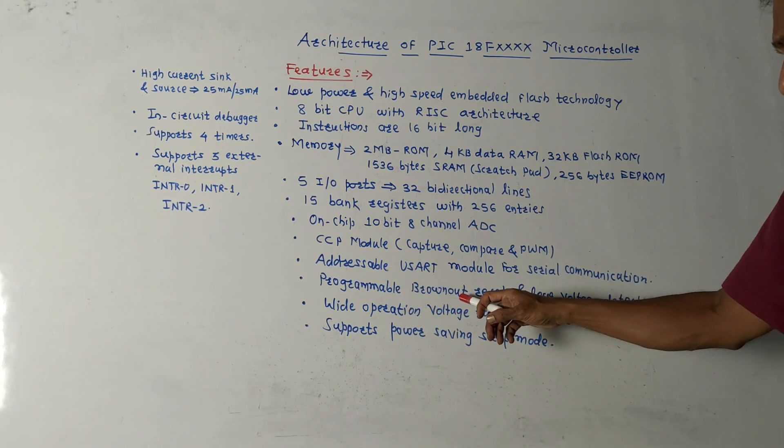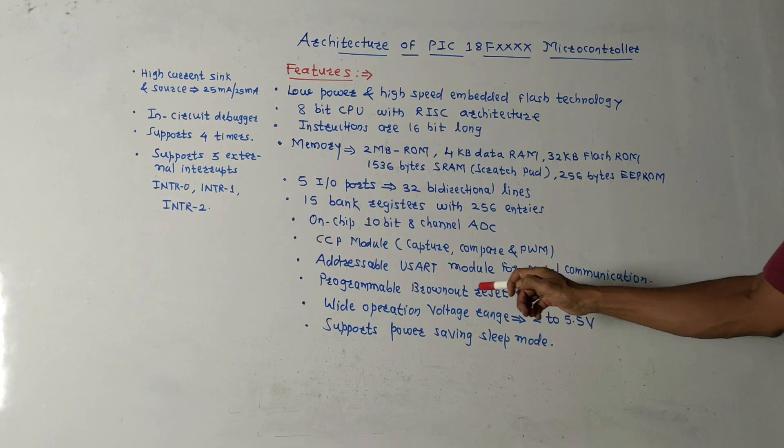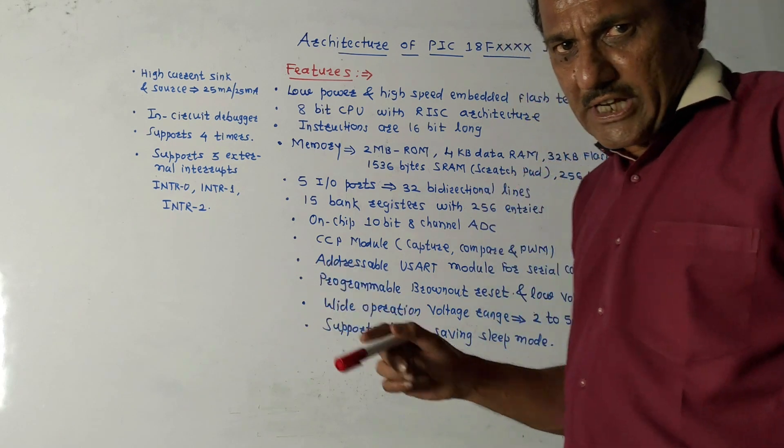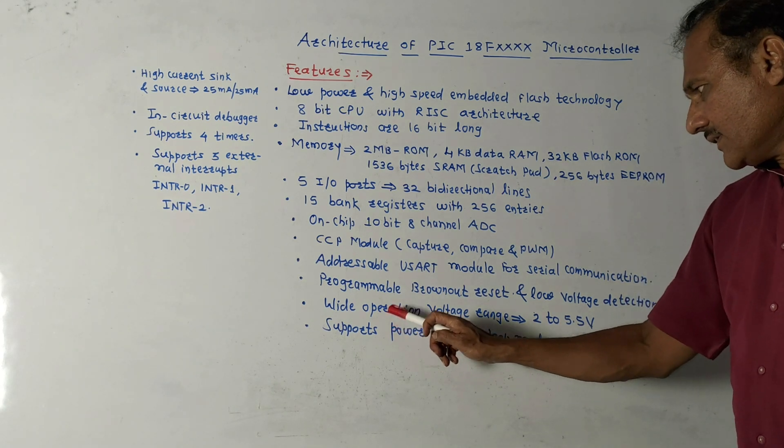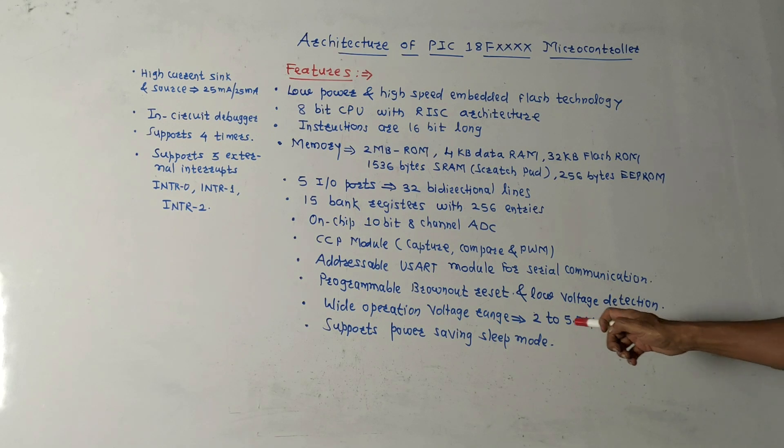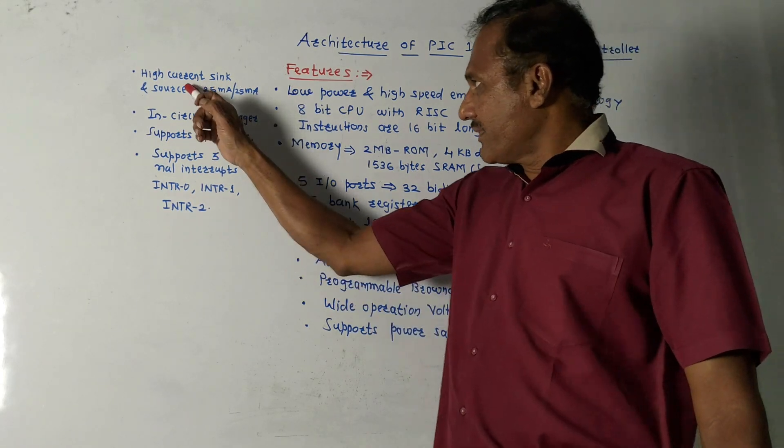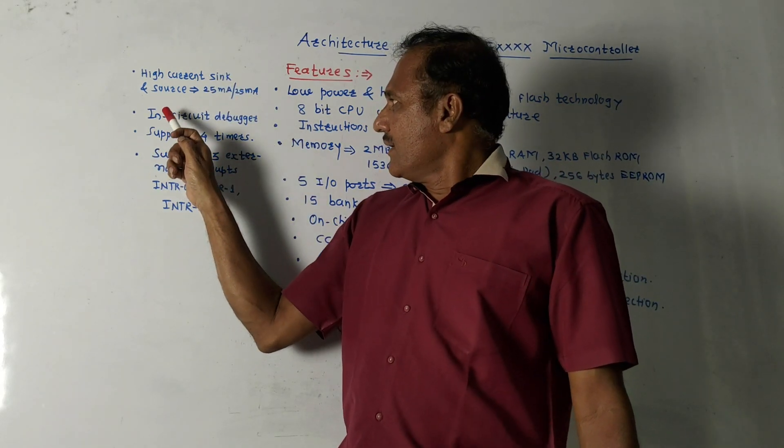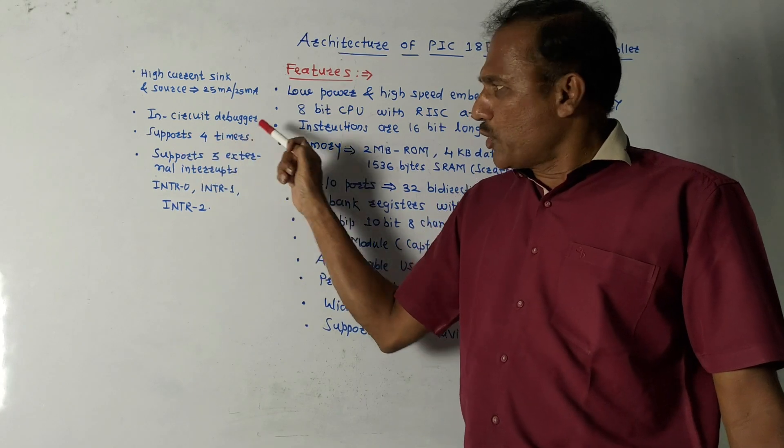It has provision of addressable USART, that is Universal Synchronous Asynchronous Receiver Transmitter model for serial communication. It consists of brownout reset. Whenever there is any malfunctioning, it is used to reset the microcontroller. As well as, it has provision to give indication for low voltage detection. Whenever there is detection of low voltage, it provides interrupt signal and the resetting of microcontroller takes place.